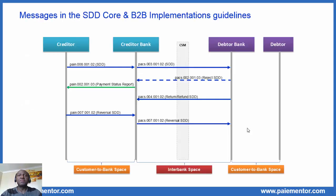Let's begin with the overview of the messages found in the SDD core and B2B implementation guidelines documents. The PAYING 2 is highlighted in green color. It is sent by the creditor bank to the creditor. In a previous video about the customer-to-bank space and the interbank space, I told you that messages sent from bank to customer are reporting messages. So the PAYING 2 is a reporting message. The customer must be informed if his instruction was rejected, and that information can be crucial in certain cases.